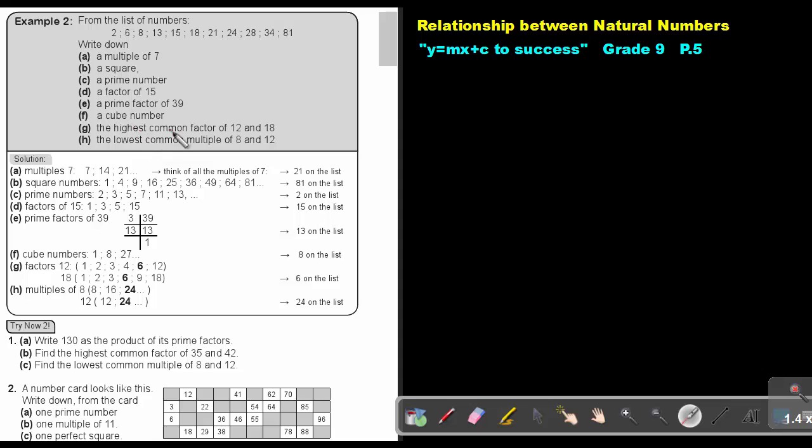The highest common factor of 12 and 18. Find the highest common factor of 12 and 18. Make use of all the factors of 12 and all the factors of 18. The highest one is 6, and that's also on the list.